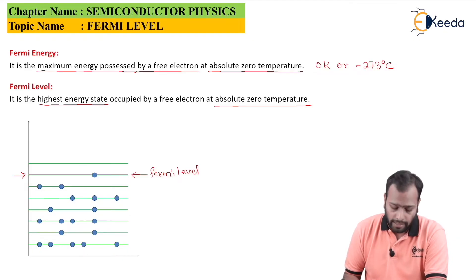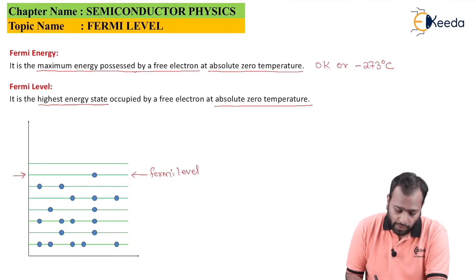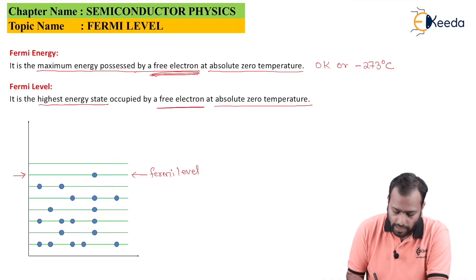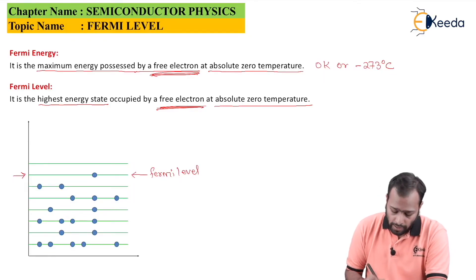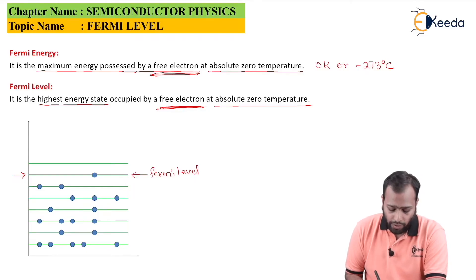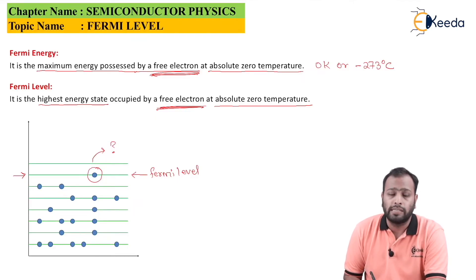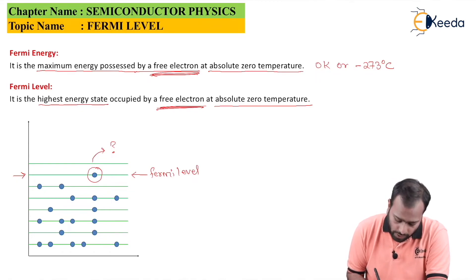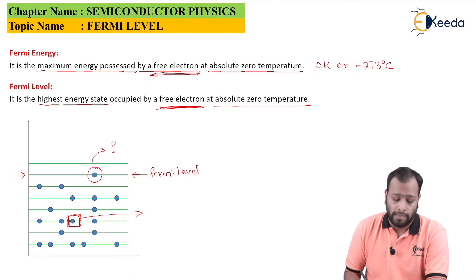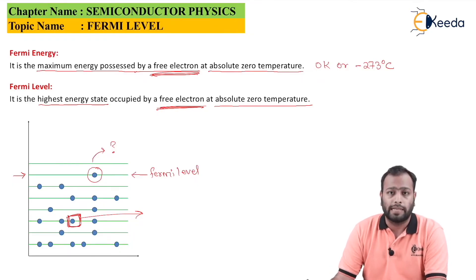So what exactly is Fermi energy? Fermi energy is the maximum energy possessed by a free electron. A very important point to note is that the free electron at Fermi energy is not the same as the free electron at Fermi level. The electron at Fermi level could possess the maximum energy, but this is not always true. There could be a possibility that another electron lower in the diagram possesses the maximum energy — that energy is called Fermi energy. So Fermi level is the highest state occupied by a free electron, and Fermi energy is the maximum energy of any electron below the Fermi level.